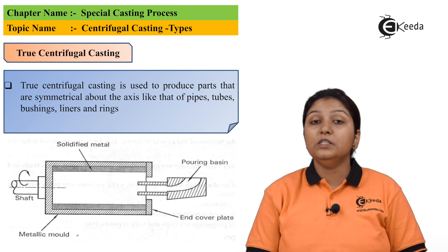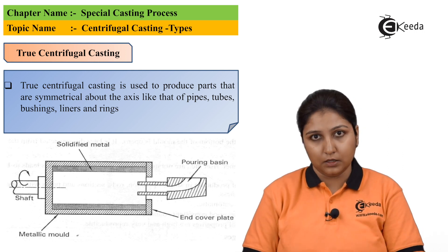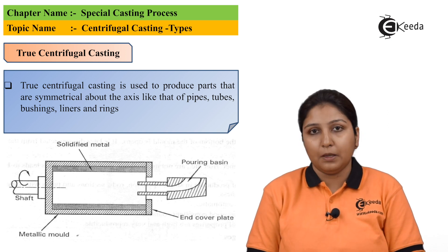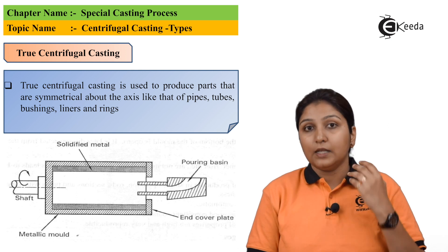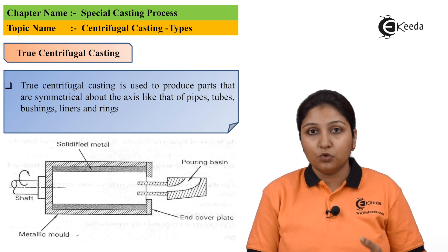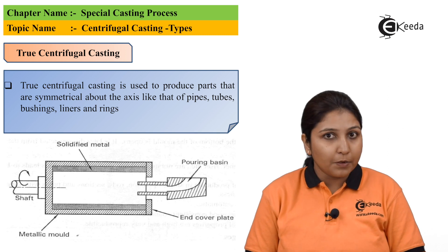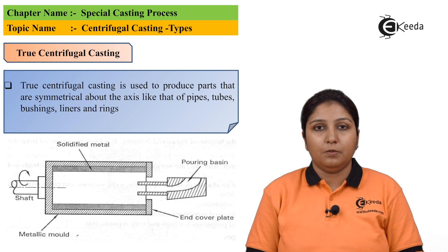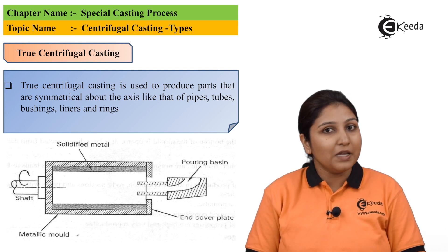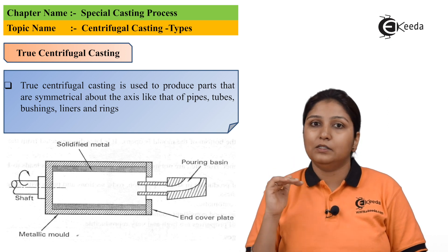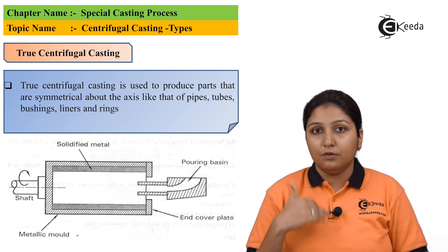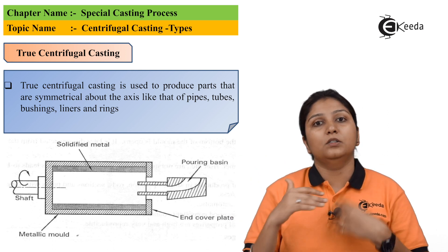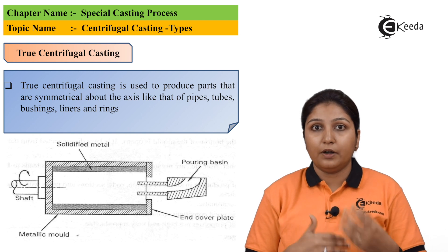What are the steps involved in true centrifugal casting? The first step is your exact mold is prepared — I am talking about pipes, but your mold can be anything as long as centrifugal motion can be easily done. Secondly, your speed is being set; speed can vary up to 3000 RPM. When your speed is set and your mold is revolving, the liquid coming from the pouring basin is being thrown towards the wall so that it gets solidified to the walls.